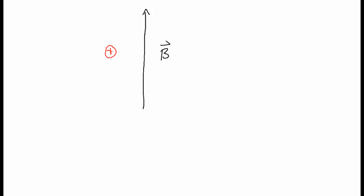If I have a positive charge come in with an upward slant, it's going to hit this magnetic field and spin around, moving upward along the field line. If I take a positive charge and bring it in from the other direction, it's actually going to move in the opposite direction. So that's one difference between an electric field and a magnetic field — the direction the charge moves along the field line depends on its initial velocity, not on the sign of the charge.